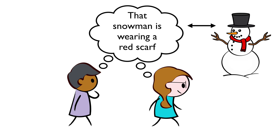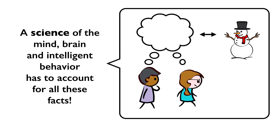Propositional content is shared in exactly the same way that different sentence tokens can share the same meaning — they share the same meaning because they assert the same thing about the world. In a course on brains, minds, and computers, we need to talk about this because a science of the mind, the brain, and intelligent behavior has to account for these facts: mental states have content, they have meaning, they make claims about the world, they're the sort of thing that can be true or false, and they can be shared in the same way that words and sentences can share meaning.